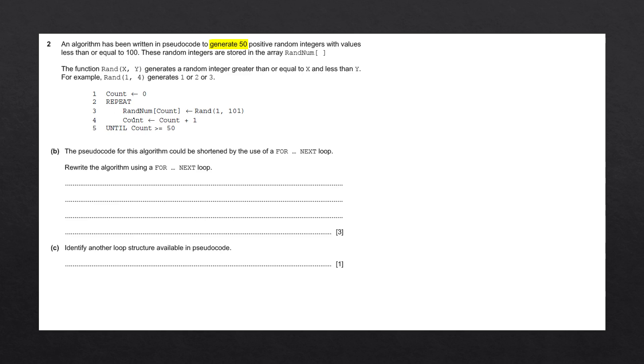The count starts at 0 and ends when the count is greater than or equal to 50. Inside the loop, we are increasing or incrementing the count by 1 on each iteration. This code, count is set to count plus 1, increases the current value of count by 1.